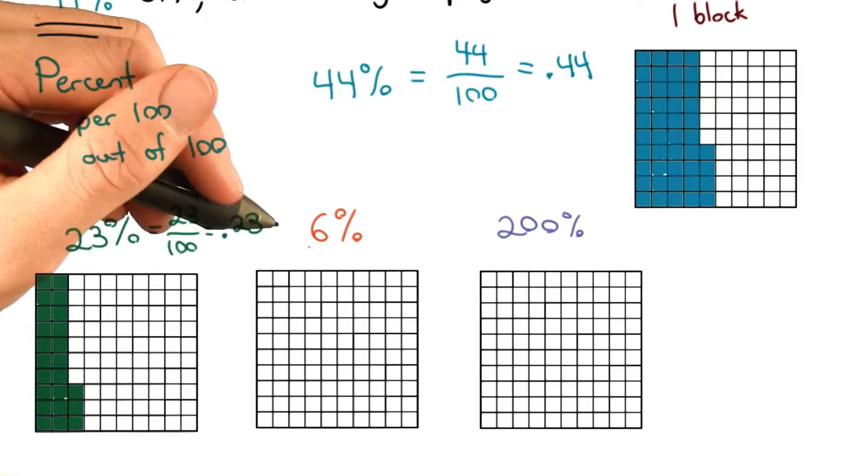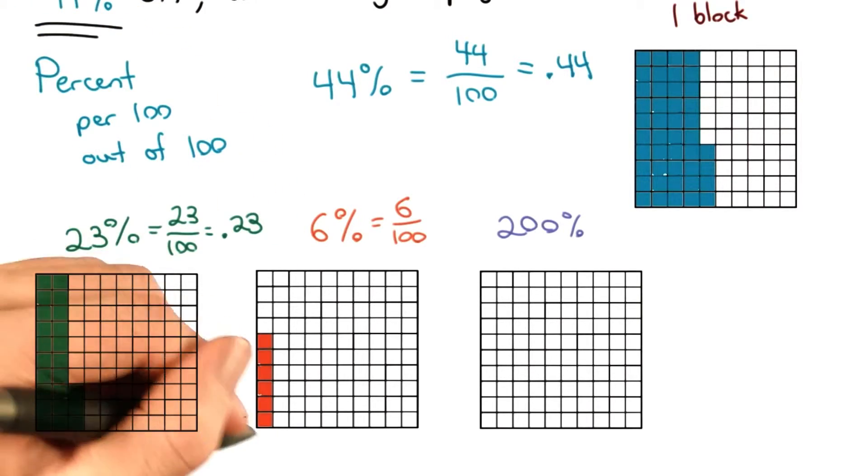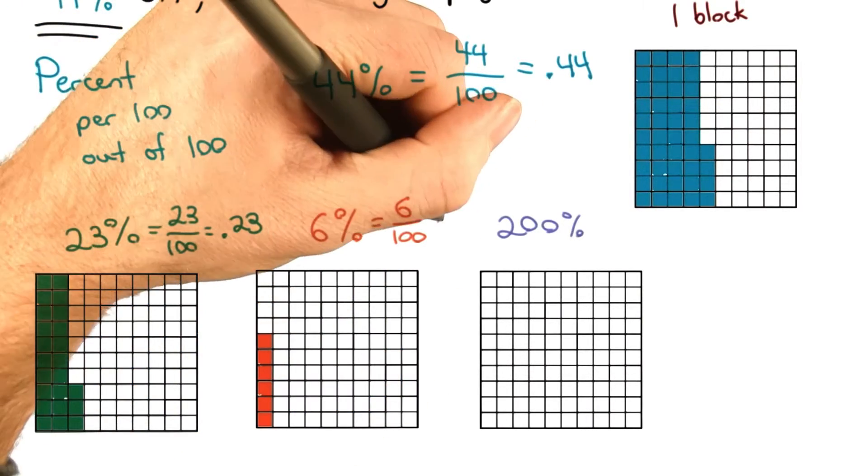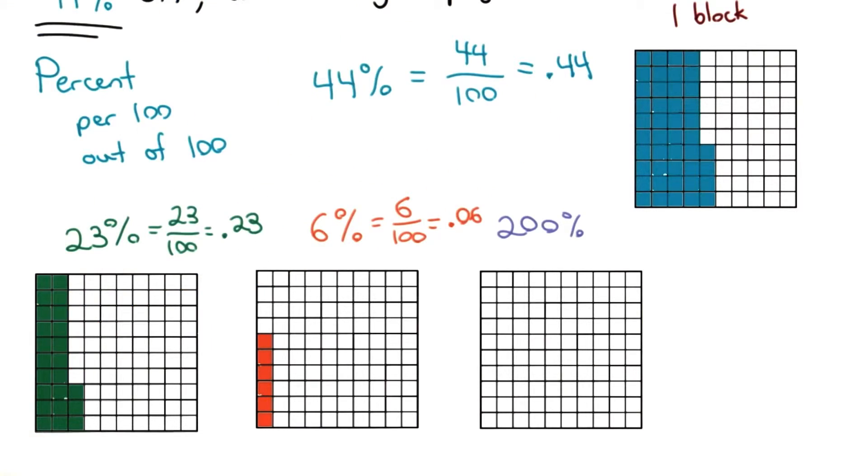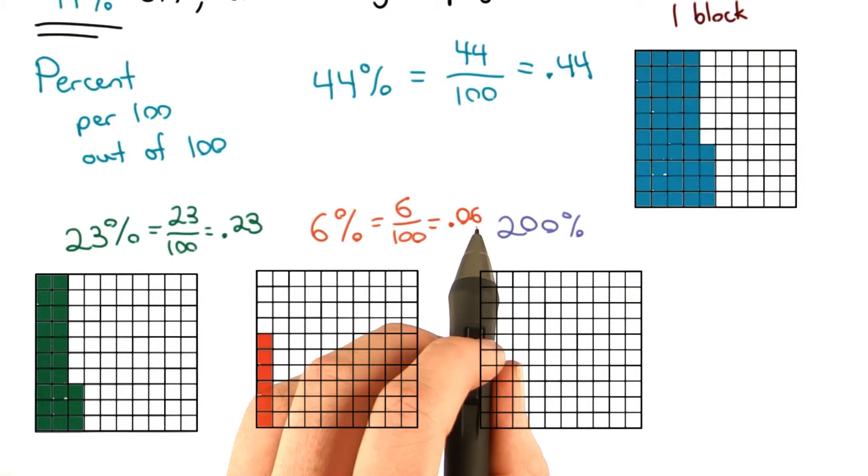For 6%, I'm going to have 6 blocks out of a hundred. So I have 6 blocks out of a hundred, or 6 hundredths, 0.06. Notice that the 6 has to be in the hundredth spot.